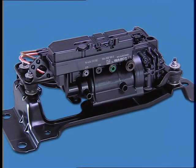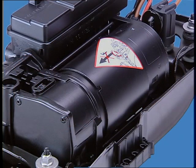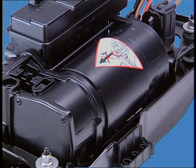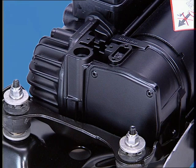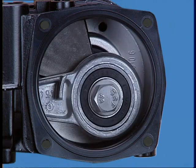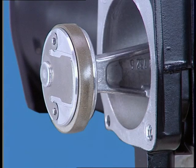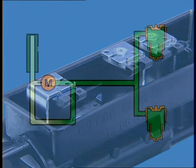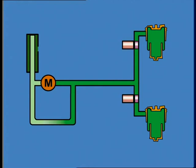The suspension compressor is driven by an electric motor that is thermally protected by a temperature sensor. The compressor mechanism operates in an oil-free casing and the connecting rod bearing is lubricated for life. The piston has a Teflon piston ring. The compressor includes three solenoids: one for each spring and a third on the outlet circuit.